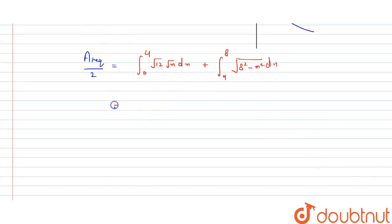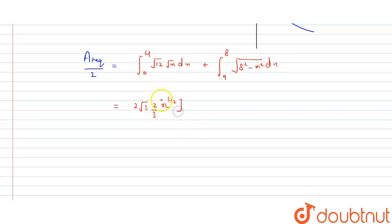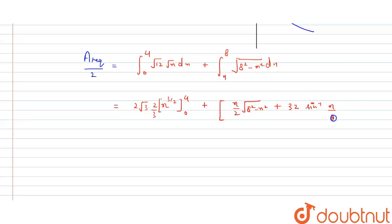So area_required / 2 = ∫₀⁴ √12 · √x dx + ∫₄⁸ √(64 − x²) dx. Here √12 = 2√3, and the integration of x^(1/2) gives x^(3/2) · (2/3). For the circle integral, the formula gives (x/2)√(8² − x²) + (64/2) · sin⁻¹(x/8), evaluated from 4 to 8.